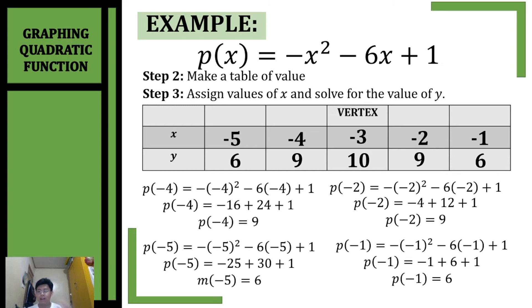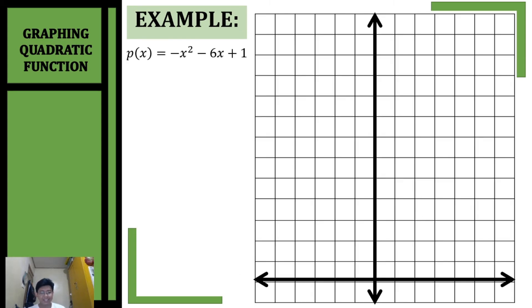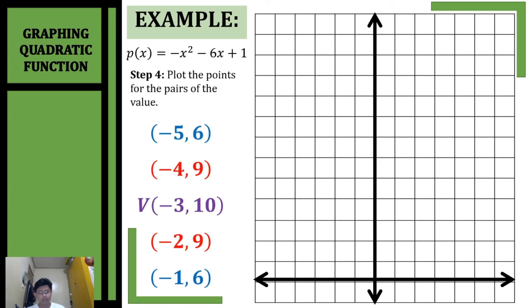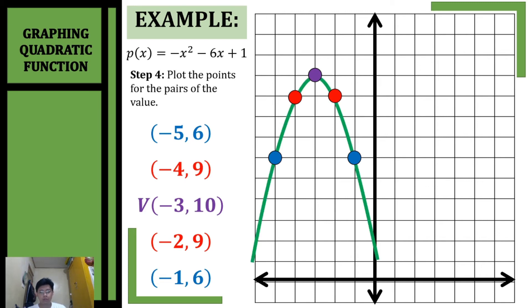Let's plot our points on the rectangular coordinate system. Starting with our vertex (-3, 10) — it's located here. Then (-4, 9) and (-2, 9), then (-1, 6) and (-5, 6). After plotting all your points, connect them and draw your parabola. The parabola opens downward, and that is the graph of our quadratic function.